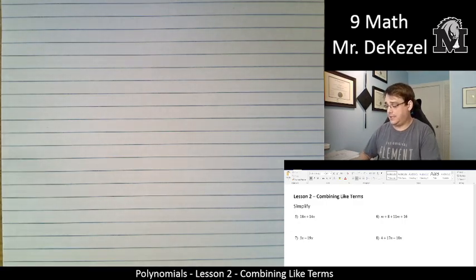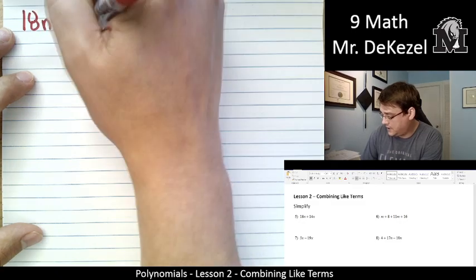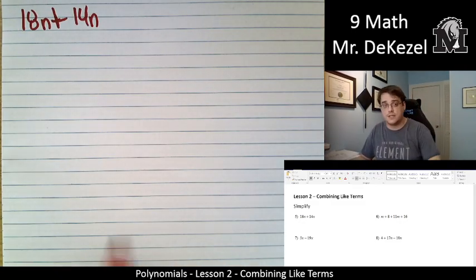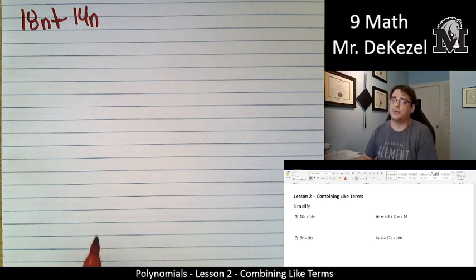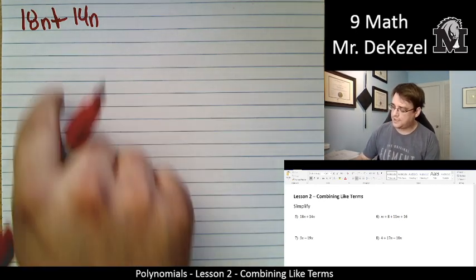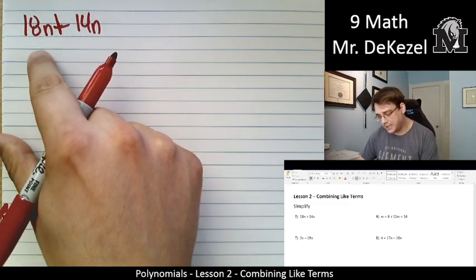First question we have is 18n plus 14n. And you may be looking at that going, Mr. DeKezel, you just said that was a binomial. And that's kind of true in its current form. It is a binomial. It's two terms. But since they are both n, right, they're both the same, we can combine them.